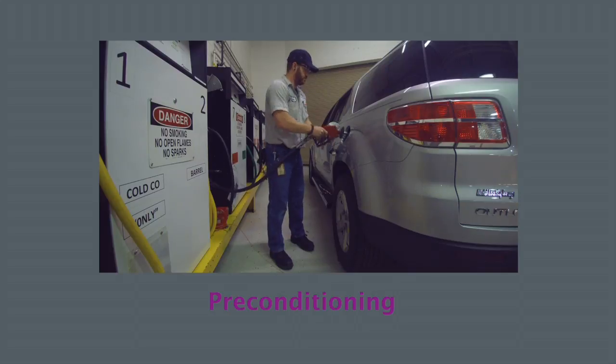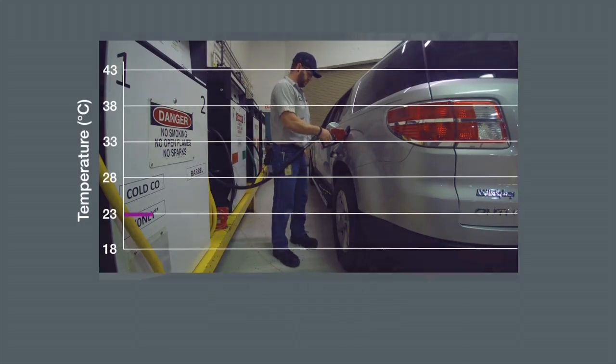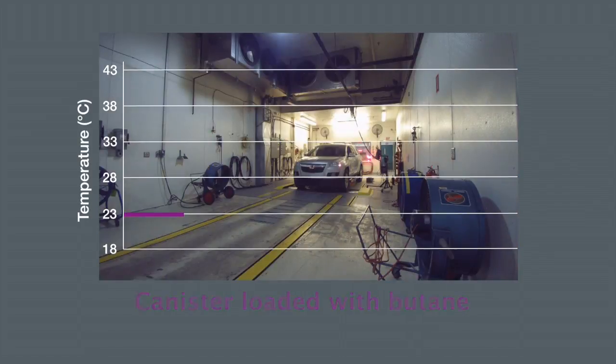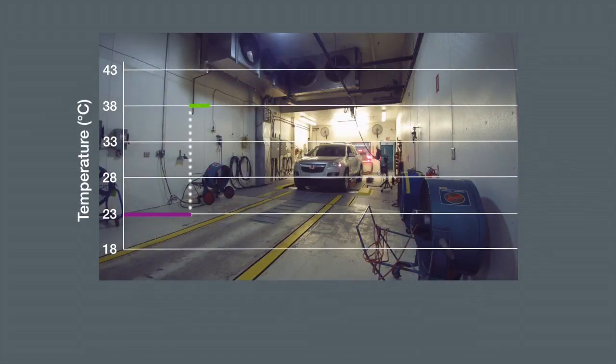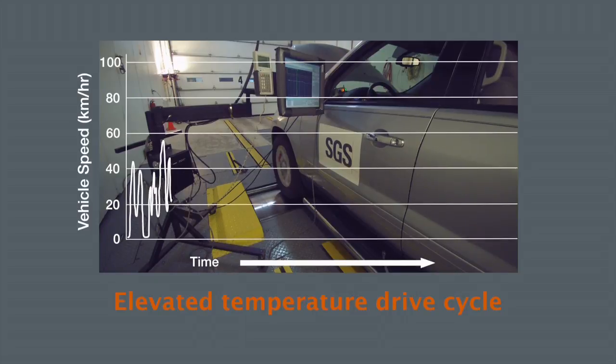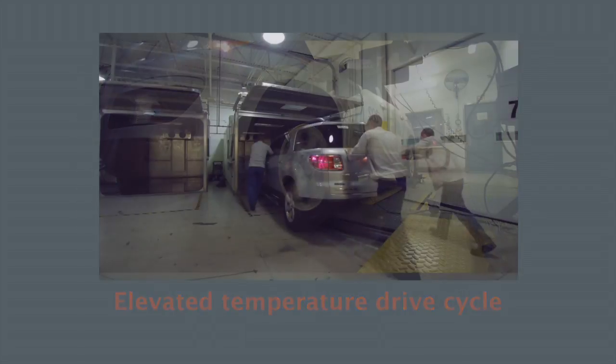The Type 4 diurnal test starts by preconditioning a vehicle. Preconditioning includes a series of predetermined steps and ends with the loading of the canister with butane. Once the vehicle reaches a defined state, the test begins with an elevated temperature soak, followed by a controlled elevated temperature drive cycle that simulates real-world driving conditions.